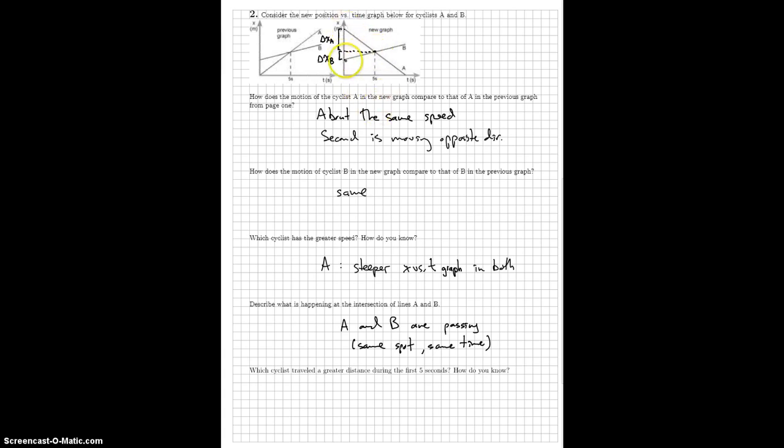A's displacement is negative because that final position is lower than the initial position. B's is positive because the final is higher than the initial. But A has clearly gone a greater distance. B's displacement would be bigger because it's positive and the other one's negative. But in terms of distance traveled, distance traveled is always positive. So we take the absolute value.